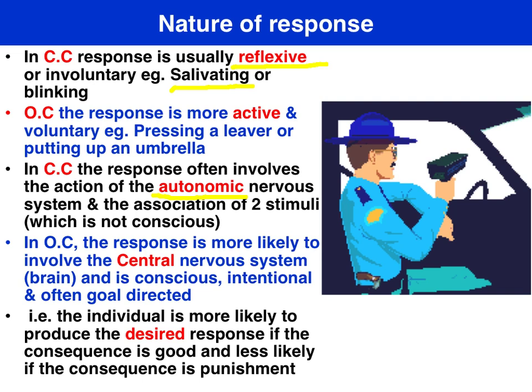For operant conditioning, the response is generally more active and voluntary. For instance, when driving past a 40km/h sign in a school zone, you have the choice of slowing down or ignoring it. When you have a test next week, you choose to study hard or not. Your behaviour is goal-directed — you'll do it more to get paid, get good marks, or get a compliment, and less to avoid punishment such as fines or demerit points. So behaviour is directed by the decision-making part of your brain, your frontal lobe — the central nervous system.